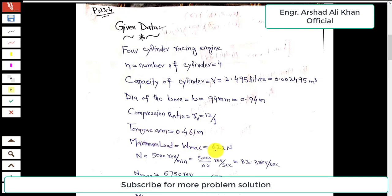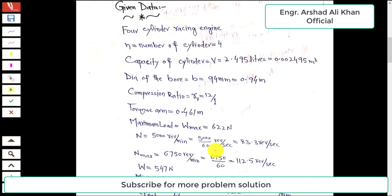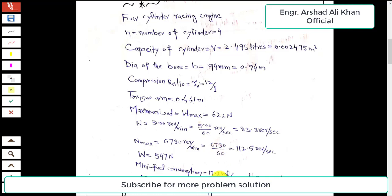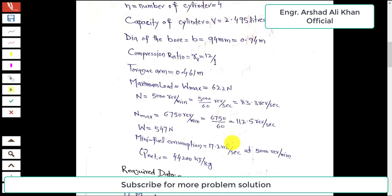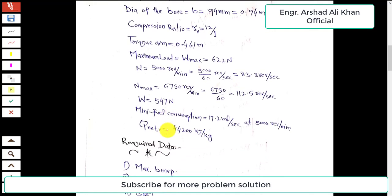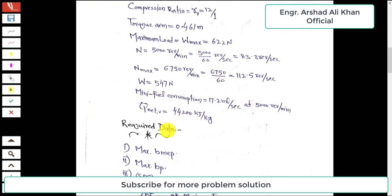The maximum load is 622 Newton at an engine speed of 5000 rpm, which converts to 83.3 revolutions per second. The peak engine speed is 6750 rpm, which converts to 112.5 rps, and the corresponding load at this peak speed is 547 Newton.